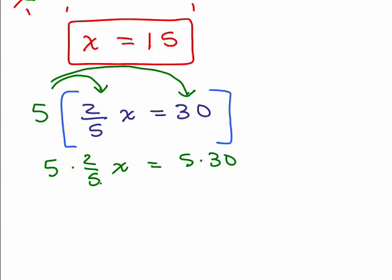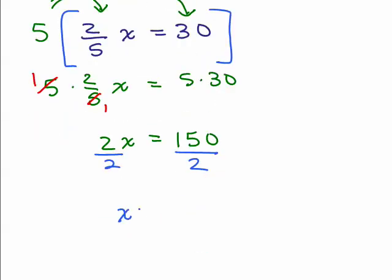So, what do we get? Well, the 5s will cancel, and notice what happens. I get a problem without fractions. So, that's a trick to do for a first step if you don't want to deal with any fractions, and then now use the multiplication or division property. So, now we're going to divide both sides by 2, and we're still going to get the answer.